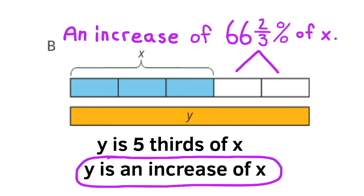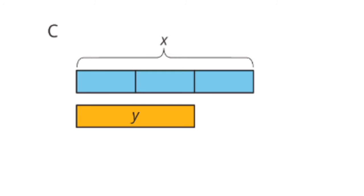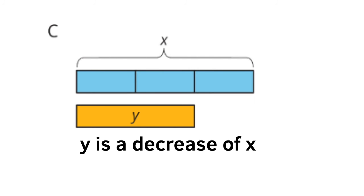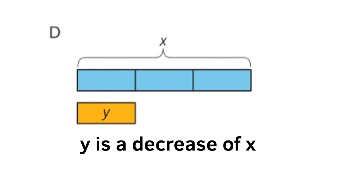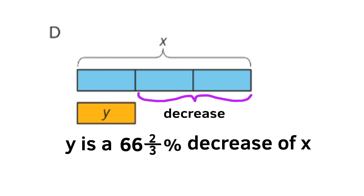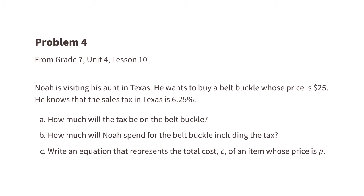Part c: this time y is smaller than x, so it's a decrease. It decreases by one-third of x, and one-third is 33 and one-third percent, so y is a decrease of 33 and one-third percent of x. Part d: y is also smaller than x, so y is a decrease of x. It decreased by two-thirds of x, and two-thirds is 66 and two-thirds percent, so y is a 66 and two-thirds percent decrease of x.